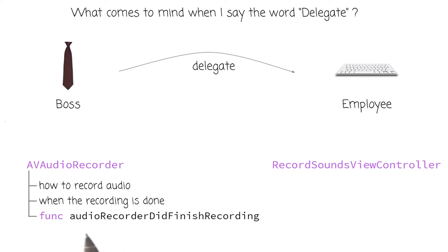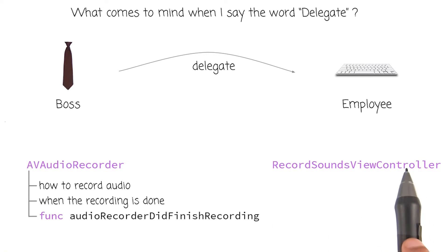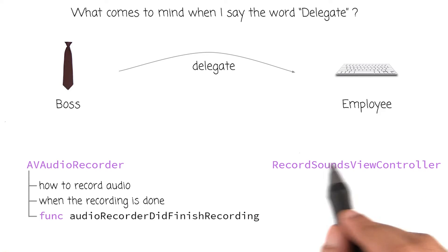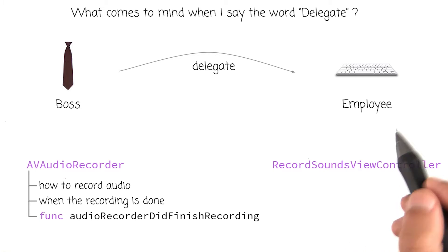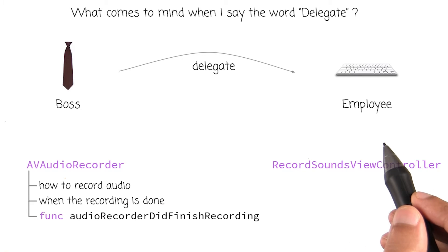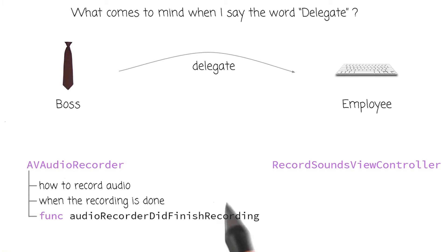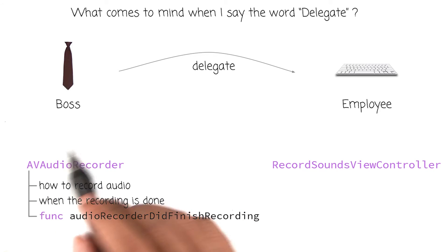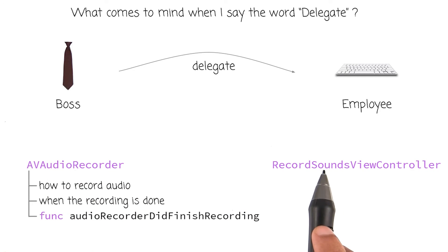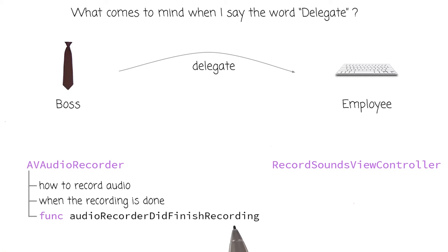Now honestly, this seems like a method we could use in our class, recordSoundsViewController. Remember the situation where our user would record a five-minute-long conversation with a friend on our app? If somehow we had access to this method, it could tell us exactly when the audio was recorded successfully. So then we could do things with that audio, for instance, play it back. So why doesn't AVAudioRecorder just tell our class, hey, audio has been recorded successfully?